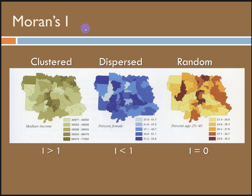The Moran's I tool produces three outputs: the Moran's I index value, a z-score, and a p-value, which evaluates the significance of the index. A positive index value approaching positive 1 indicates clustering. Values close to negative 1 indicate negative correlation or dispersion. When the index is close to 0, that's a random distribution. When a p-value is small and the z-score falls outside the confidence level, the null hypothesis can be rejected — meaning the data is showing a pattern too unusual to be random chance, and there is spatial clustering of values in the study area. We always have to consider the p-values and z-scores alongside the index.